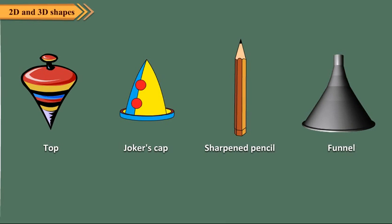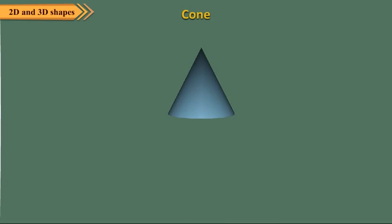Children, now look at these familiar objects. All these objects have the shape of a cone. A cone has one vertex and it has one curved edge. It has two faces, one curved face and one flat face.